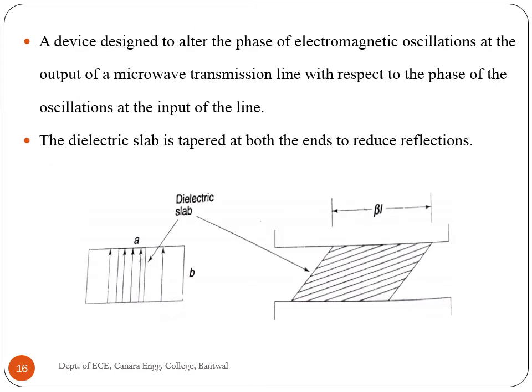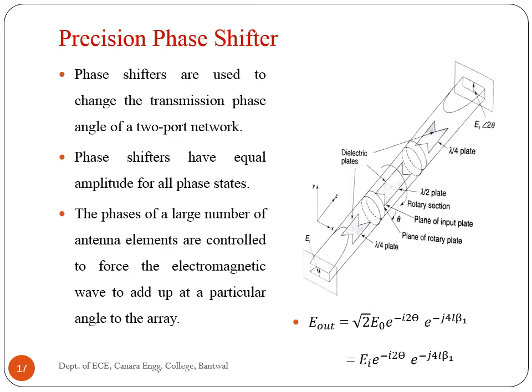Phase shifters can be realized by placing a lossless dielectric slab within a waveguide parallel to and at the position of maximum E field. A differential phase change is produced due to the change of wave velocity through the dielectric slab. The dielectric waveguide phase shifter consists of waveguide sections containing a movable dielectric plate. The phase velocity and phase shift are affected by the position of the dielectric plate in the waveguide. The dielectric slab is tapered at both ends to reduce reflections. Precision phase shifters are used to change the transmission phase angle of a two-port network and have equal amplitude for all phase states. A precision phase shifter can be designed as a rotary type.